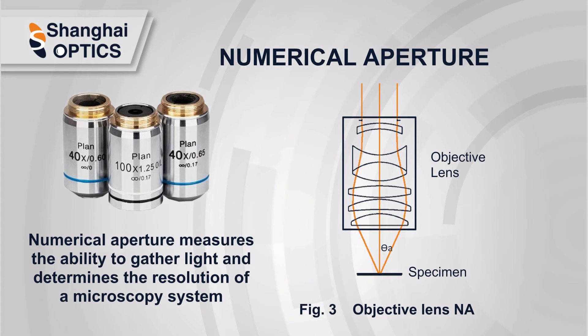The most important parameter of a microscope objective is the numerical aperture. Numerical aperture measures the ability to gather light and determines the resolution of a microscopy system.